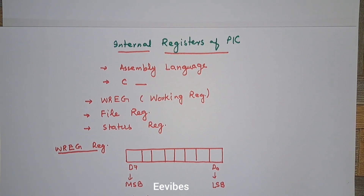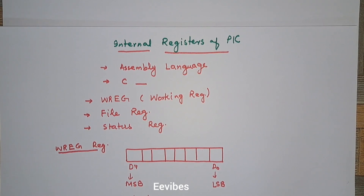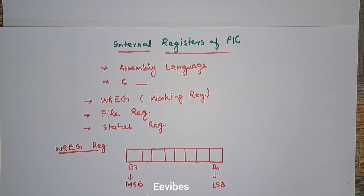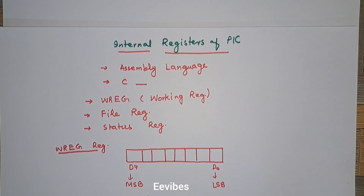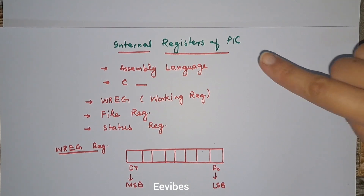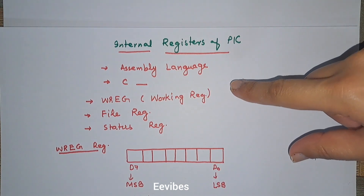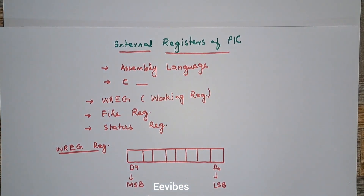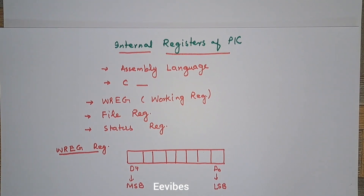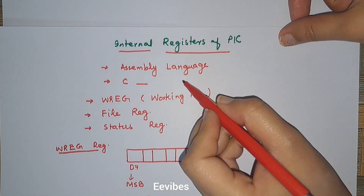Hi everyone, this is Asma Mushtaab from the Double E Vibes. In this lecture I am starting the course of the PIC microcontroller, where I will first give you a brief introduction about the internal architecture and the registers that we will be frequently using for programming. Later on we will start the lessons about assembly language programming, since you can program the PIC microcontroller either in assembly language or in C language.